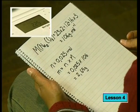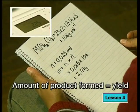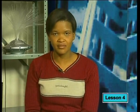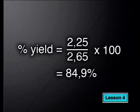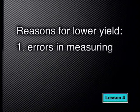This theoretical mass is only slightly more than the mass of product Aaron obtained. We call the amount of product formed the yield. The percentage yield tells us about the ratio between the actual mass of product and the theoretical mass of product. In this case, we have 2.25 grams divided by 2.65 grams times 100 — that is a percentage yield of 84.9%. There are a number of reasons why this percentage is not 100%. Often the main reason for a lower yield is errors in measuring. All equipment has a certain level of accuracy and there may also be human error too.